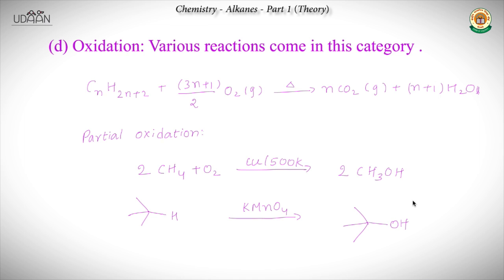In oxidation, there are various reactions. When an alkane is heated in the presence of oxygen at high temperature, all the bonds break and you get CO₂ and H₂O - this is complete oxidation, or burning. There is also partial oxidation: in the presence of less oxygen or oxidizing agents like KMnO₄, it is partially oxidized. For example, methane treated with oxygen in the presence of copper gives methanol, and 2-methylpropane treated with KMnO₄ gives an alcohol product.